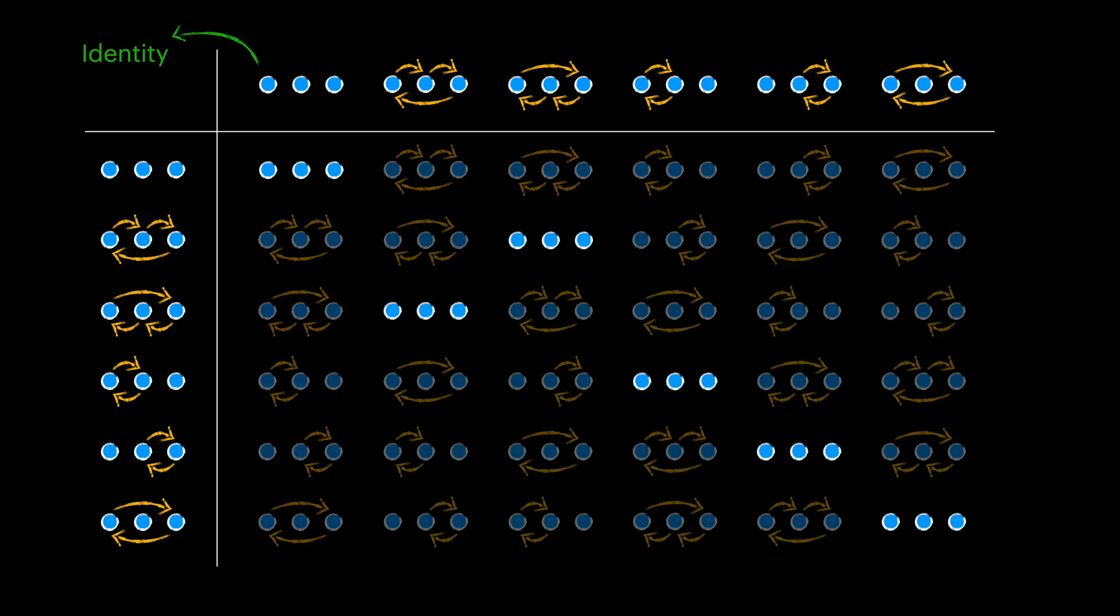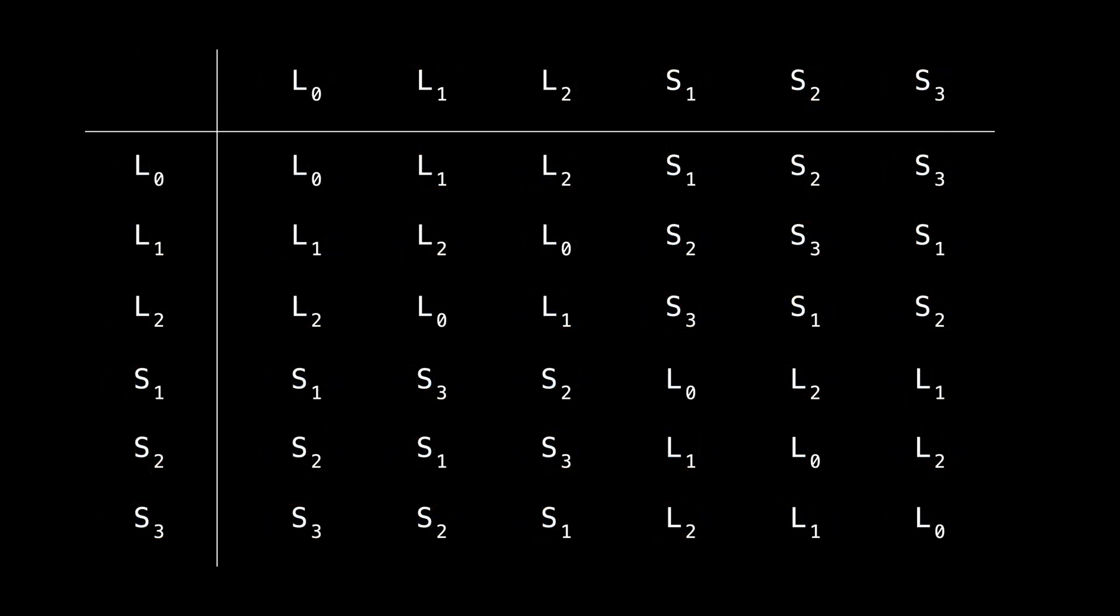We can also see each permutation has a unique inverse permutation as well, which neutralizes its effect and gives us the identity permutation. Let's again replace each permutation shape with a symbol. Here I'm showing looping three items by L and swapping between pairs of items with S.